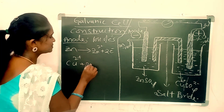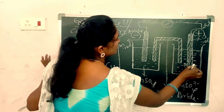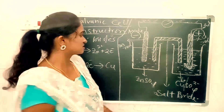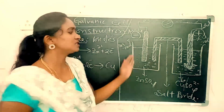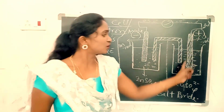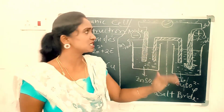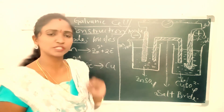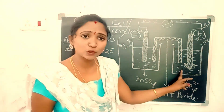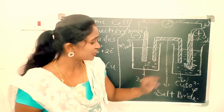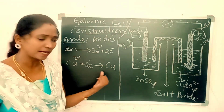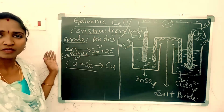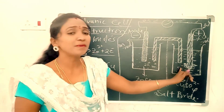Copper²⁺ accepts electrons from the anode and is deposited as pure copper at the copper electrode. So at the anode, zinc electrode loses electrons; at the cathode, copper ions accept electrons. Copper²⁺ ion undergoes reduction by gaining electrons. Loss of electrons takes place at the anode; gain of electrons takes place at the cathode.